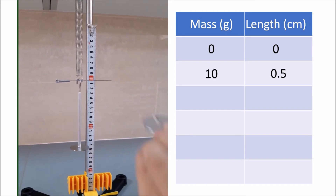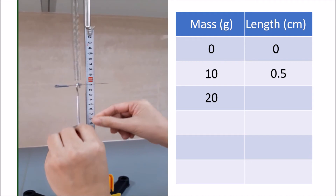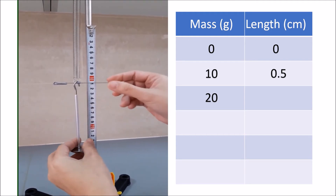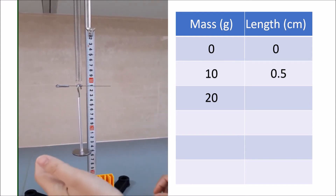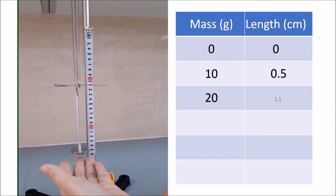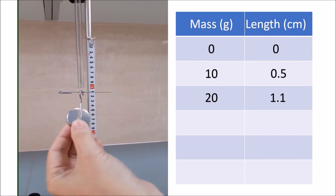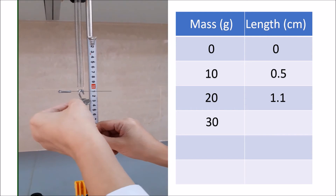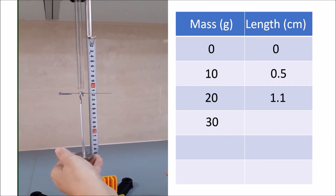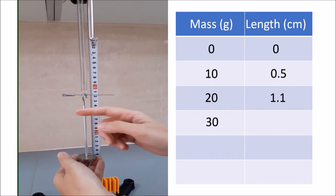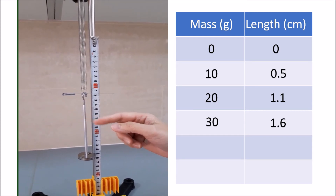I will add another 10 grams, so this will be a total of 20 grams. Now we can see it is 1.1 centimeters. For our 30 grams, we can see it is 1.6 centimeters.